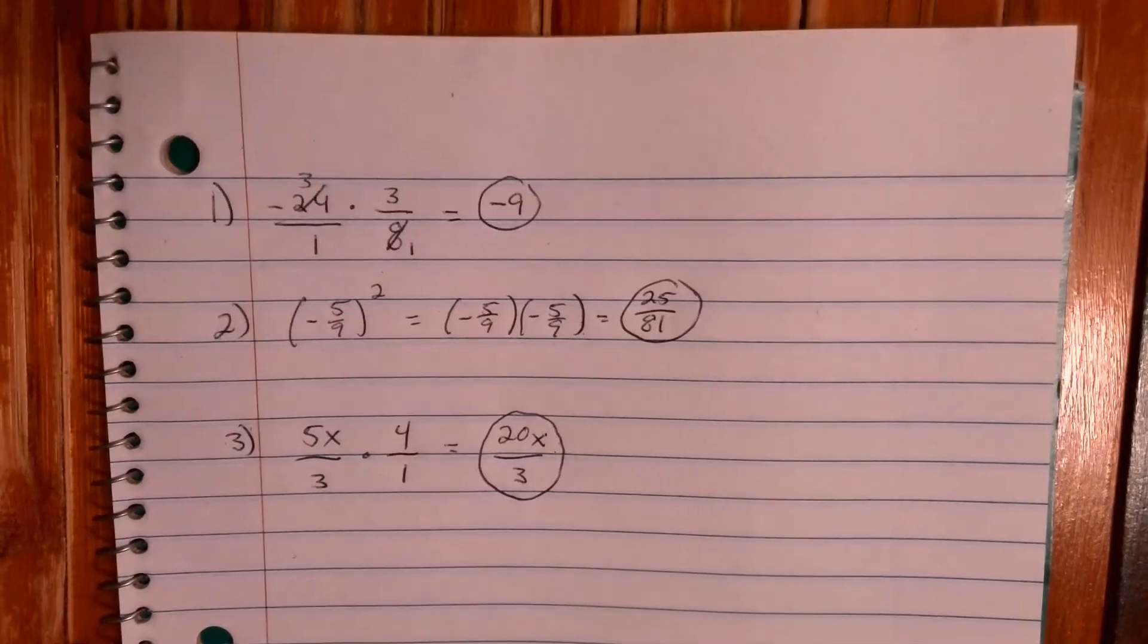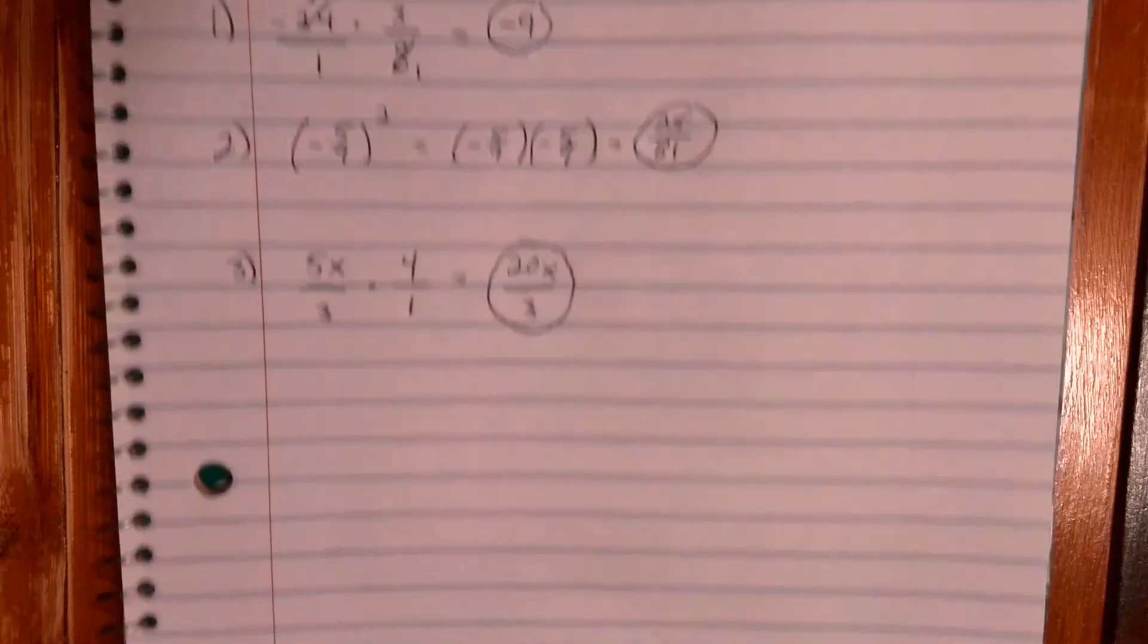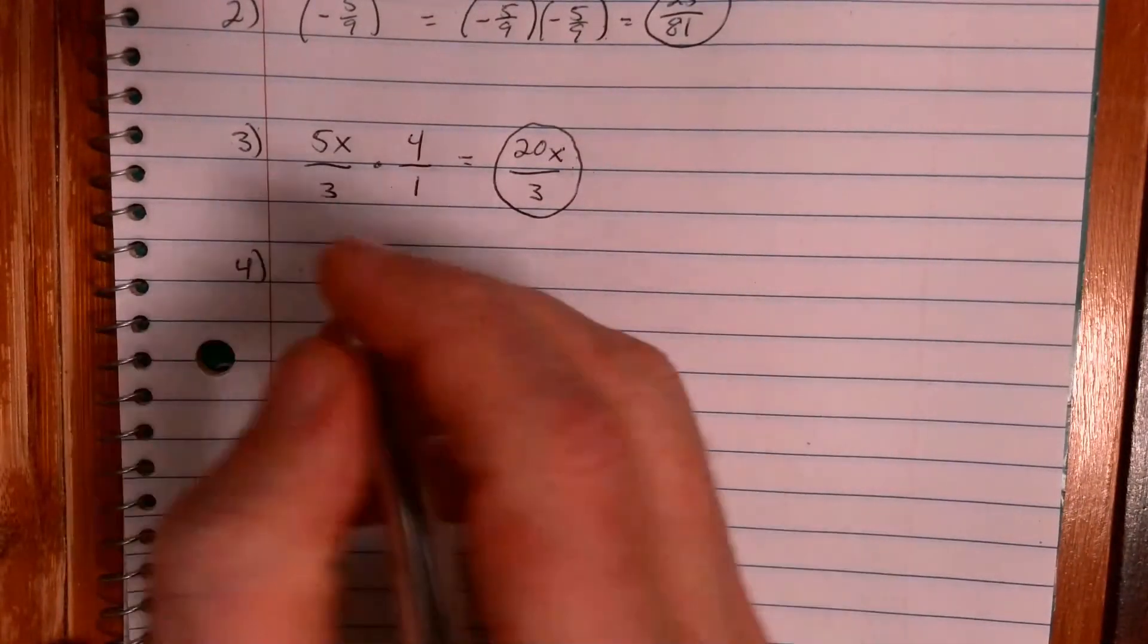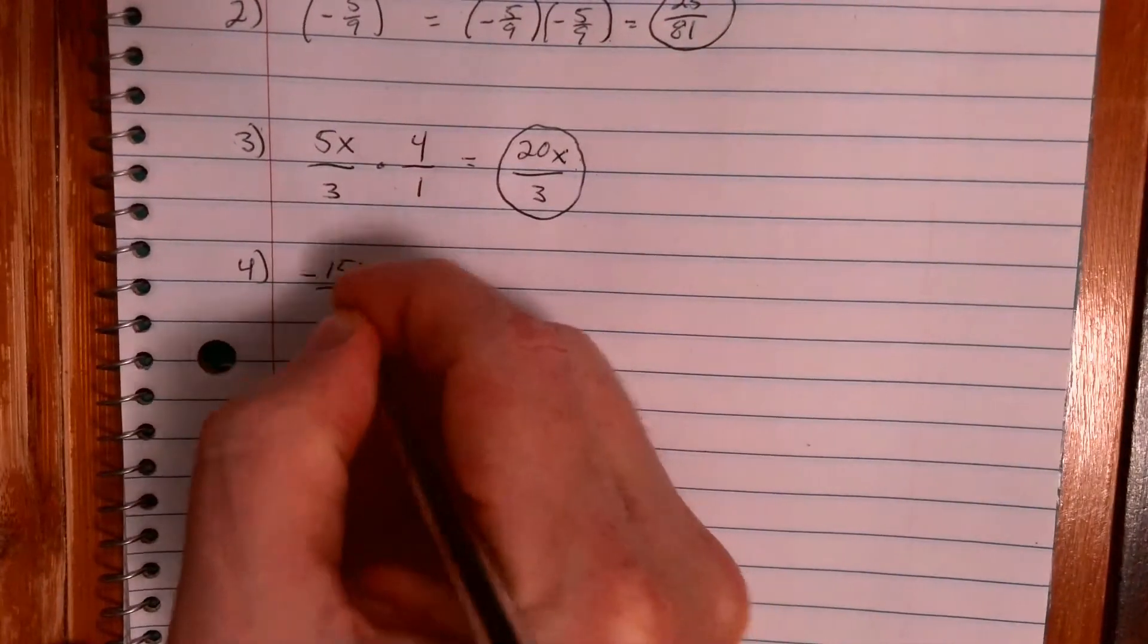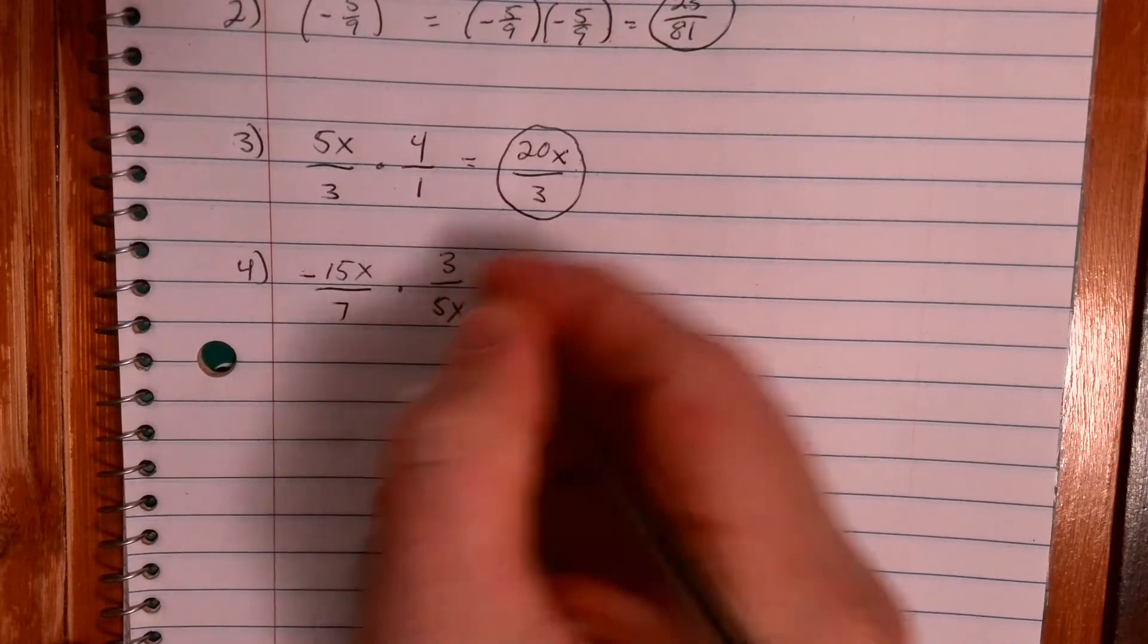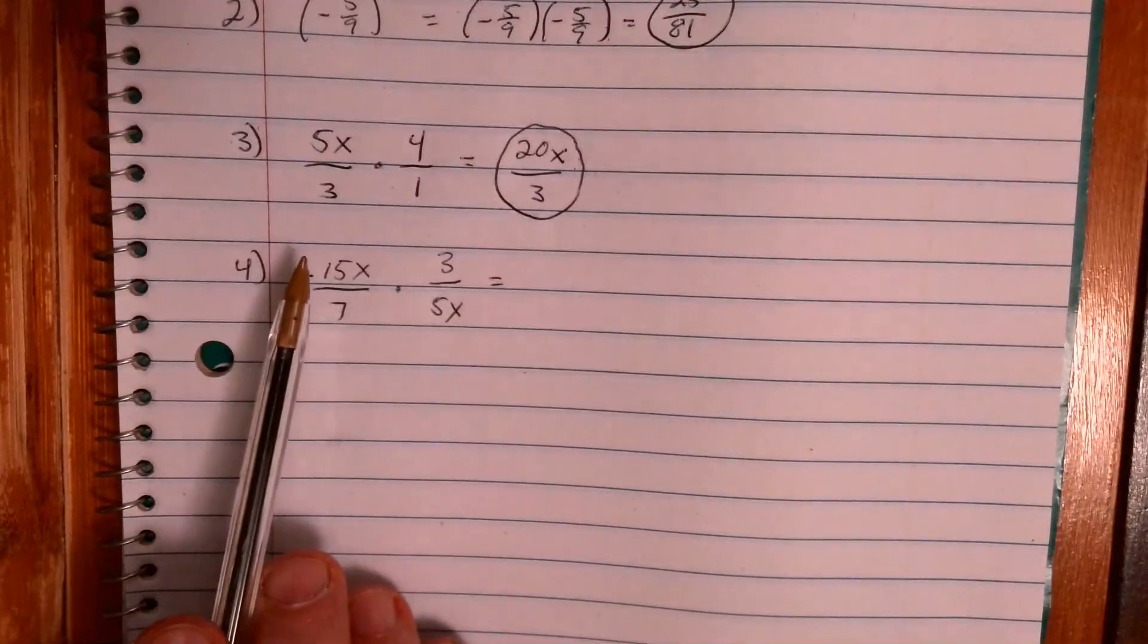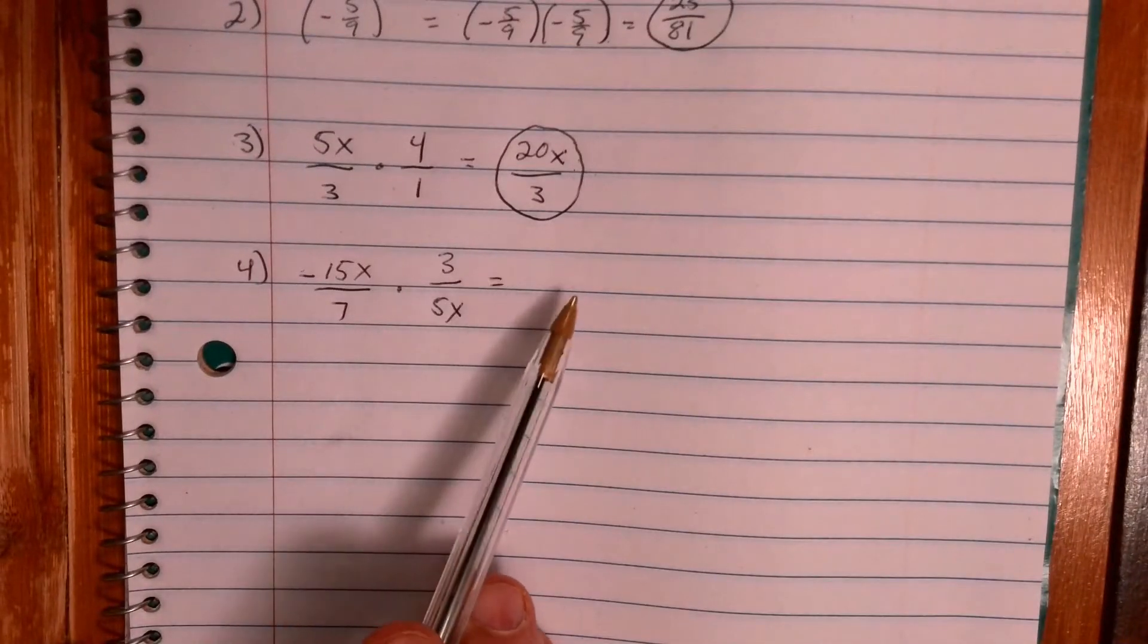Right, fourth one getting a little complicated here. I'm gonna have a negative 15x over 7 times 3 over 5x. All right, we're gonna multiply these. Now could we multiply straight across? Sure, we can multiply straight across and we get what, negative 45x over 35x.